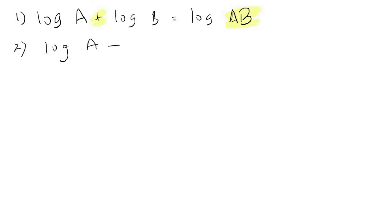The answer is log A over B. So same thing, because it is a minus, you can truncate and write them together using a division sign. And the third formula will be log A power n.